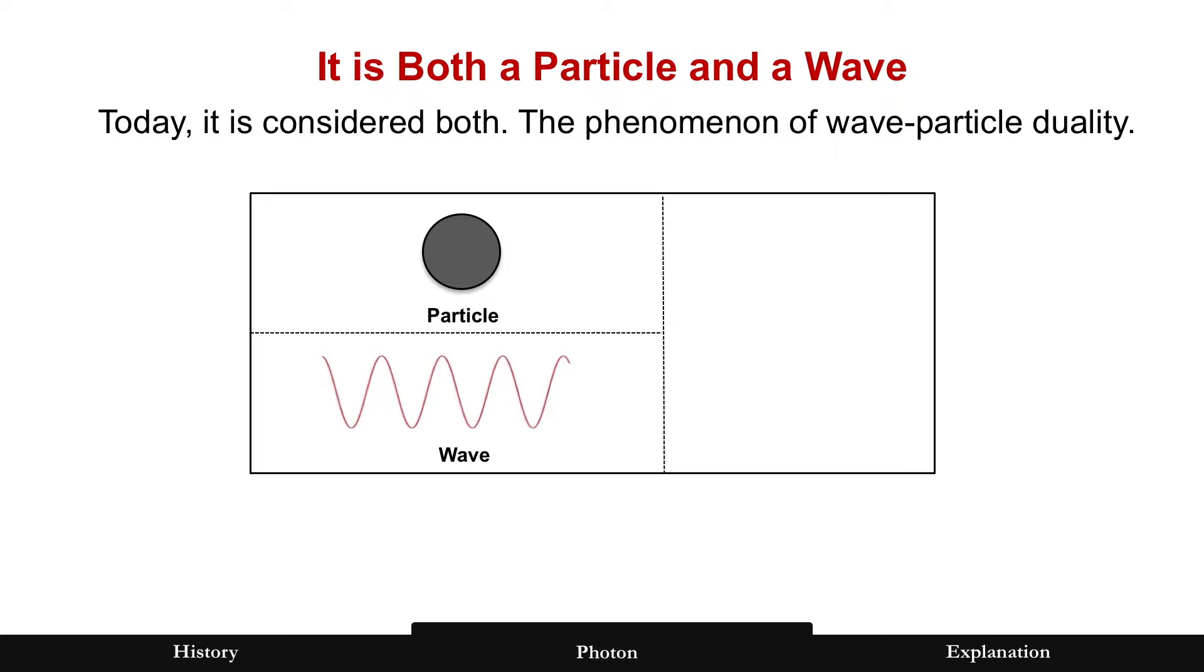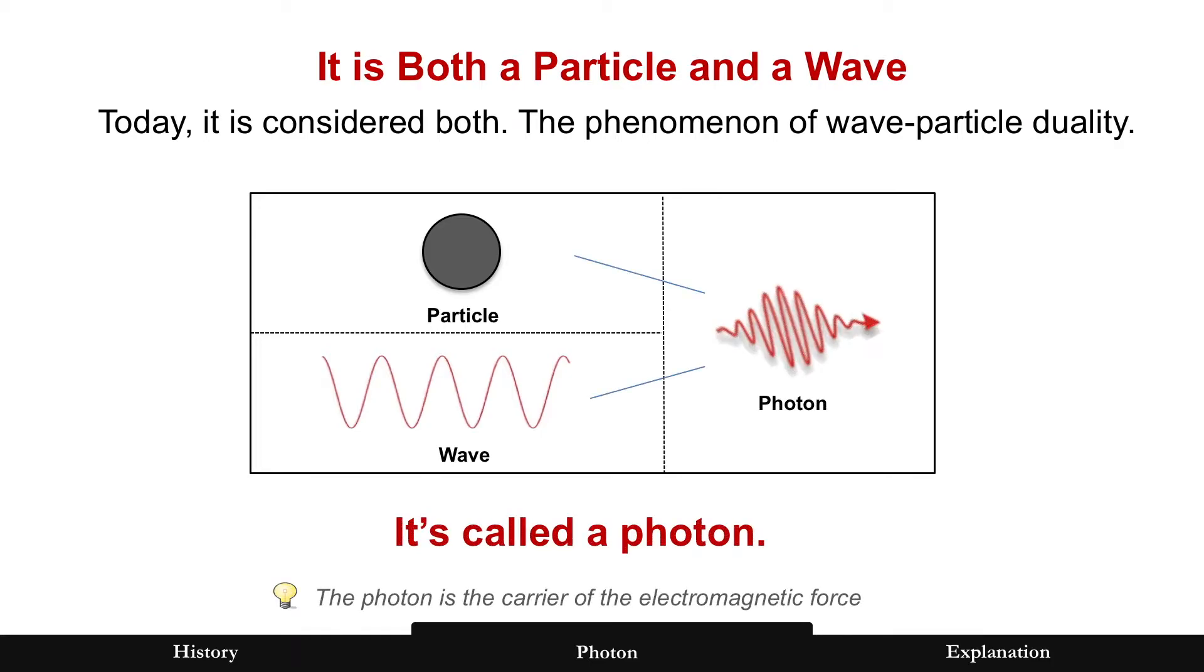By the 1900s, it's been considered to be both for a century. So it is both a particle and a wave, a phenomenon known as wave-particle duality, and it's called the photon. The photon is the carrier of the electromagnetic force. Basically, everything on the electromagnetic spectrum is carried by the photon.